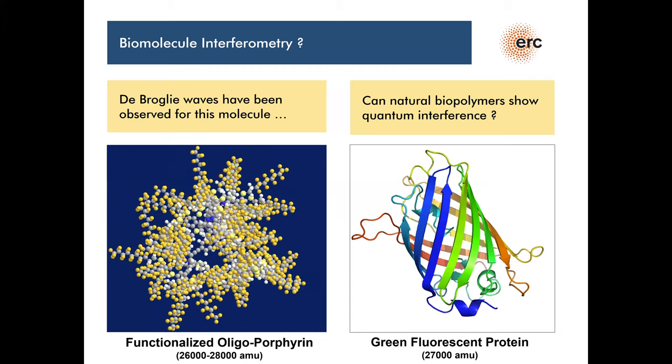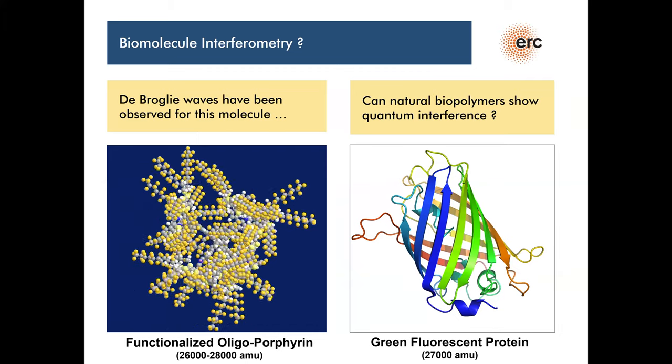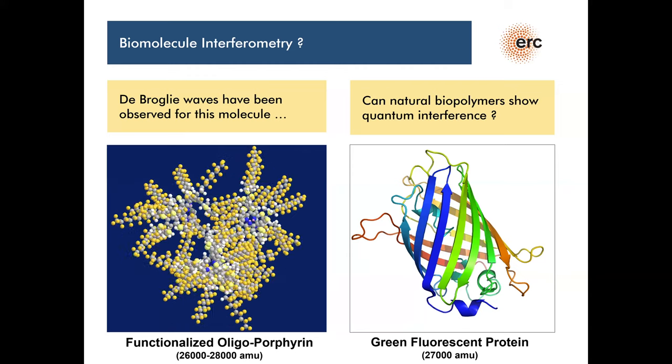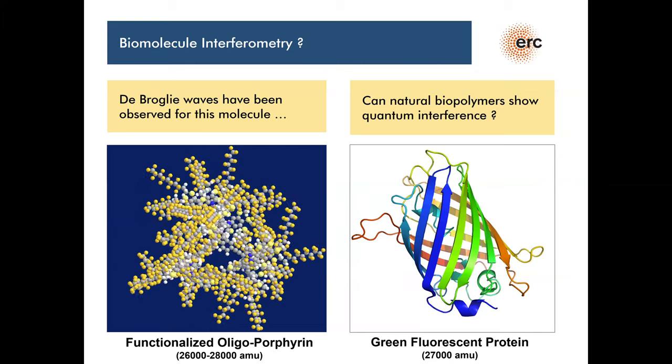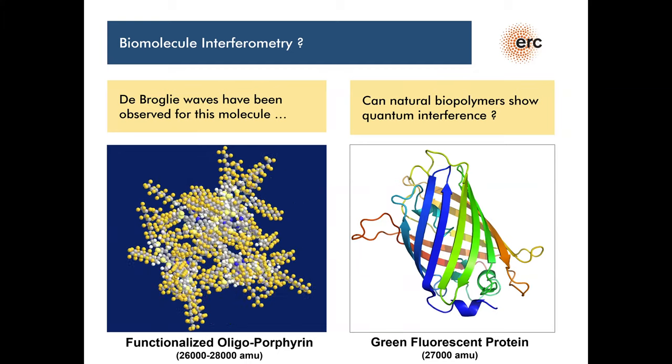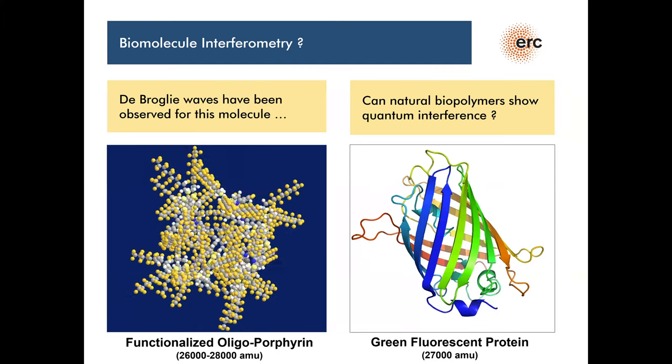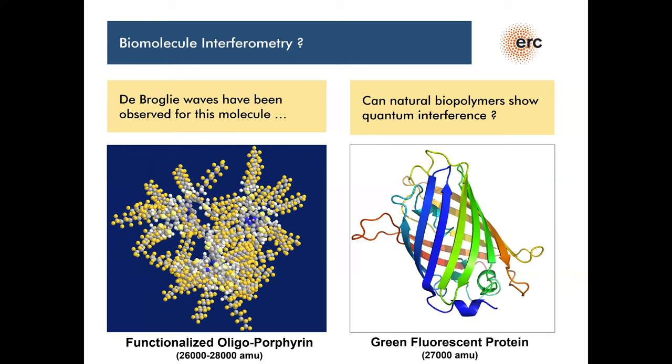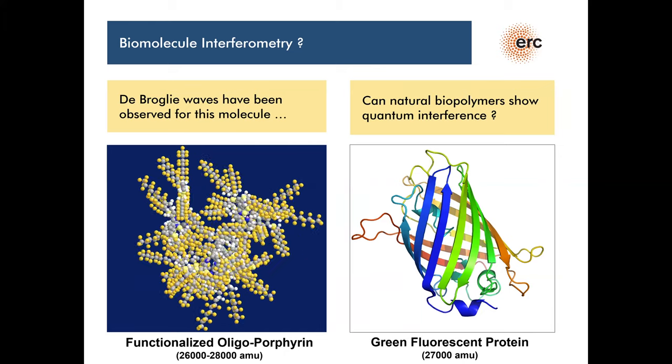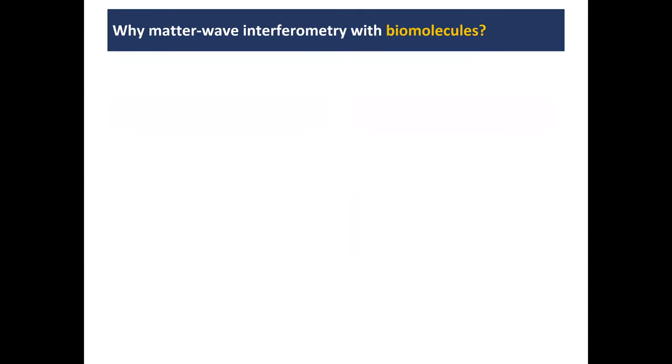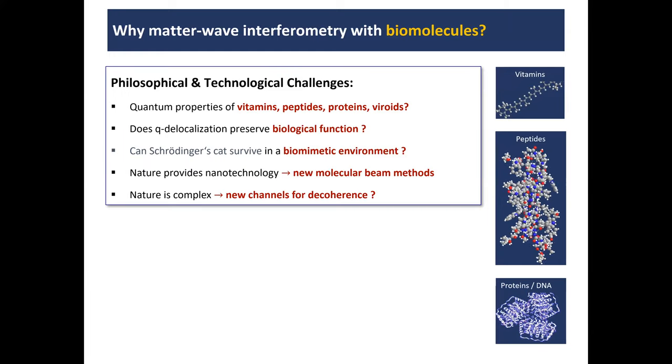Actually, the particle that I showed to you before that is in perfect quantum superposition is this functionalized oligoporphyrin that has a mass very much comparable to what people in biology love, green fluorescent proteins. It's really the same ballpark. The number of atoms is a bit different because proteins typically have more hydrogen than fluorine, but the mass is really the same. So why not just interfere the green fluorescent protein? This has many, many technical issues. And I'll come to that in a second. But we had already a number of different biomolecules in our interferometers.